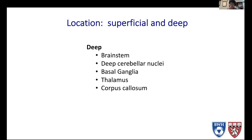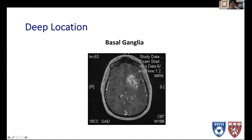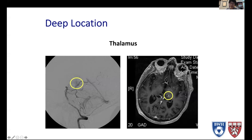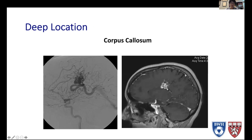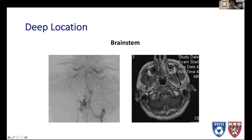What about location? Deep is defined as being in the brainstem, deep cerebellar nuclei, basal ganglia, thalamus, and corpus callosum. For example, an AVM located in the basal ganglia is deep. An AVM in the thalamus is also deep. Corpus callosum is also considered deep, as is the brainstem. These are clearly not superficial cortical locations.